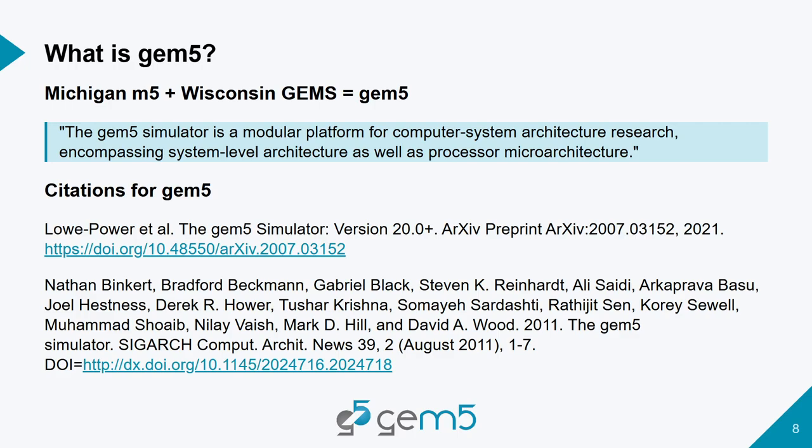GEM5 is M5 plus GEMS. GEM5 is described as a modular platform for computer system architecture research, encompassing system-level architecture as well as processor microarchitecture. There are two canonical citations for GEM5: the original GEM5 paper published in Computer Architecture News, and GEM5 20, a follow-on paper published a few years ago.